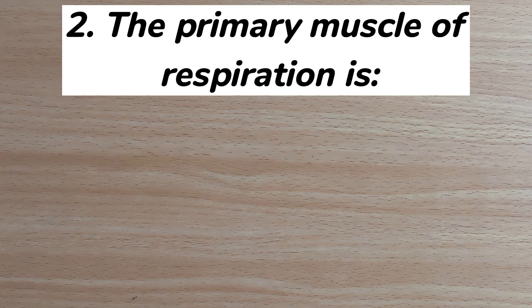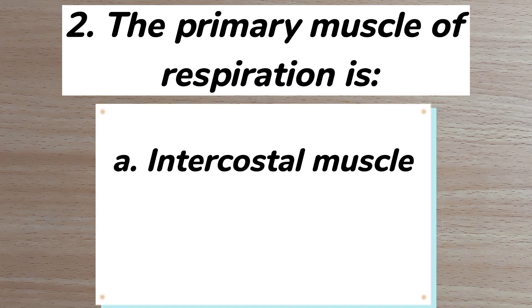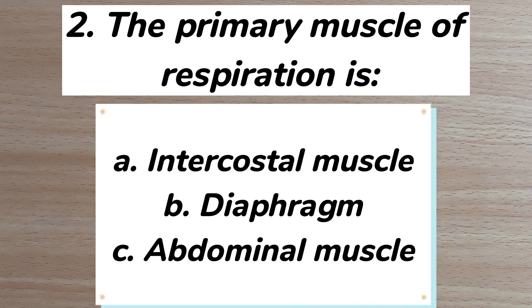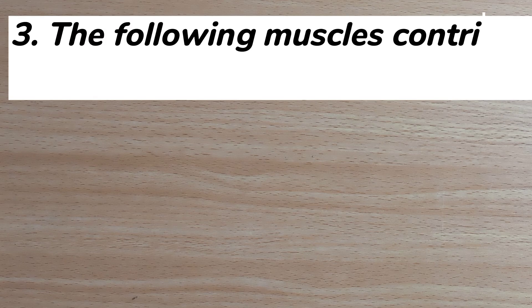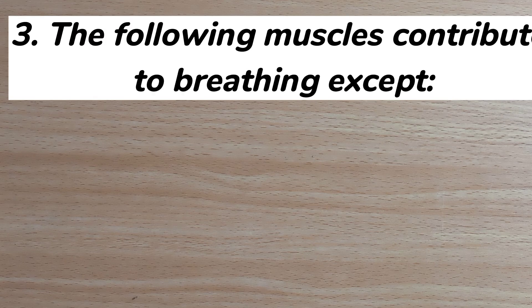Number two: the primary muscle of respiration is A) intercostal muscle, B) diaphragm, C) abdominal muscle. The correct answer is B: diaphragm. Number three: the following muscles contribute to breathing except...